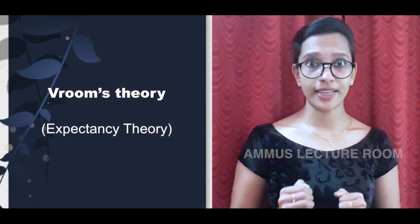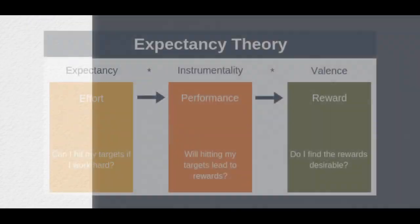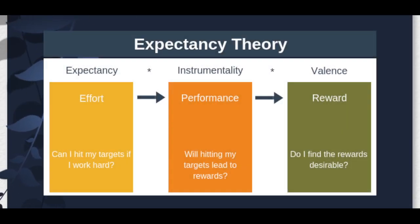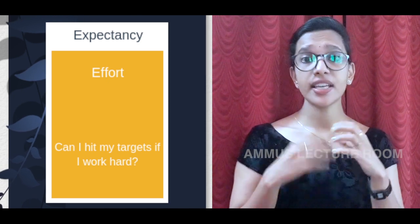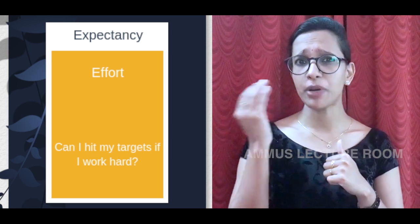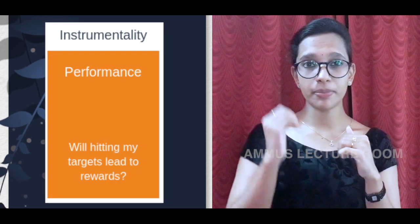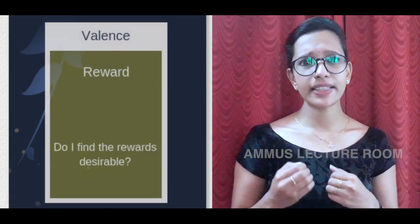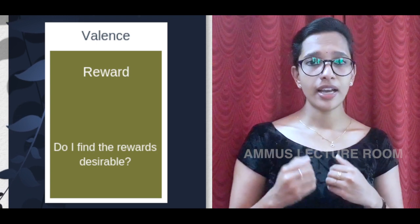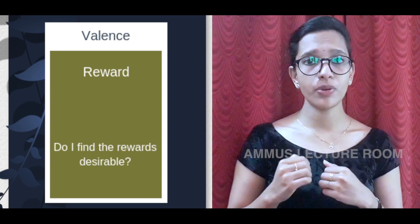The third theory is Vroom's Expectancy Theory, introduced by Victor Vroom in 1964. This theory involves three components: Expectancy — the belief that effort leads to achieving the target; Instrumentality — if the target is achieved, a reward will be given; and Valency — whether the reward is desirable, positive or negative.